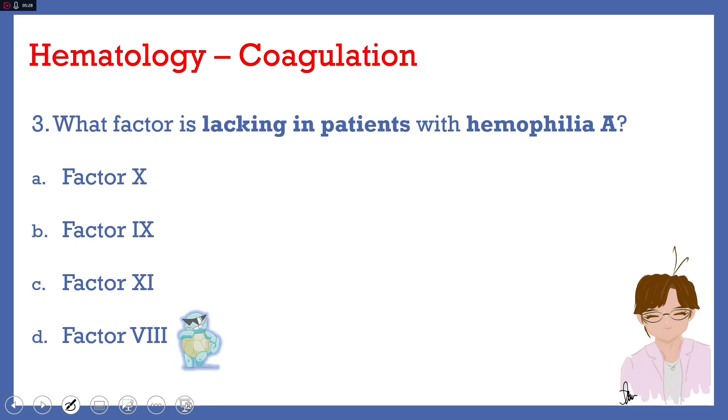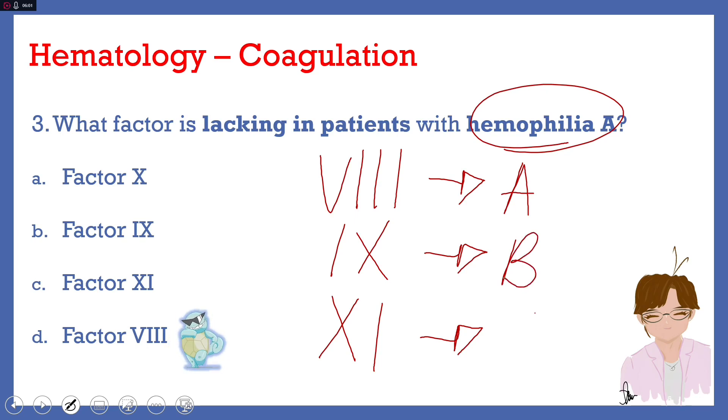The X-linked recessive form of factor 8 deficiency is hemophilia A. But be aware there is also hemophilia B and hemophilia C. Please remember factor 8, factor 9, and factor 11 are those factors that when deficient will lead to hemophilias. Hemophilia A for factor 8, hemophilia B for factor 9, and hemophilia C for factor 11. Factor 9 is also known as Christmas factor, causing hemophilia B, also known as Christmas disease.